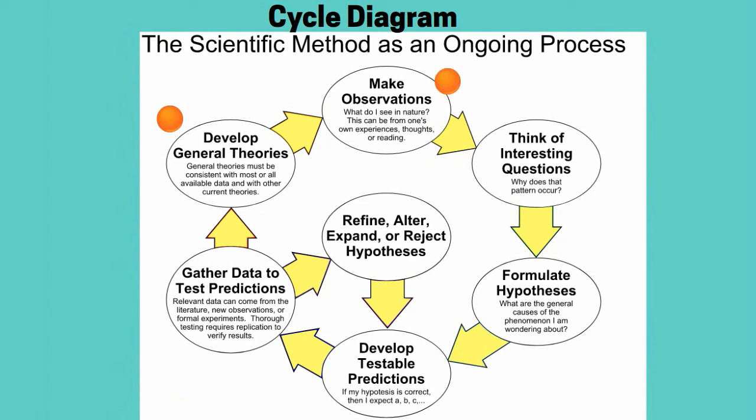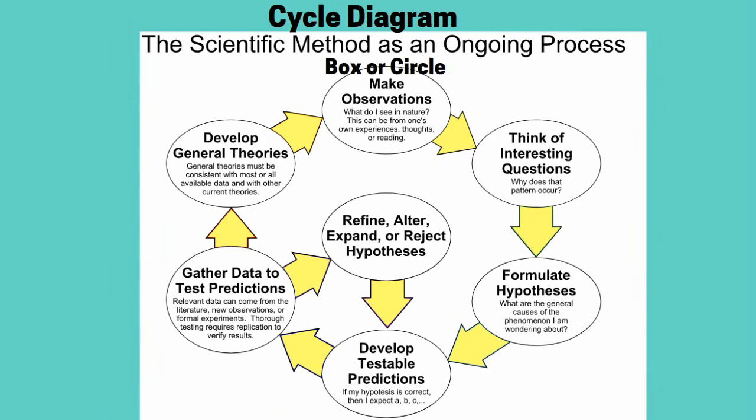To create a cycle diagram, write a brief description of each event in a box. Place one event at the top of the page in the center. Then, moving in a clockwise direction around the circle, write each event in its proper sequence.